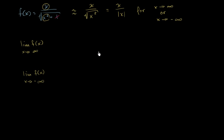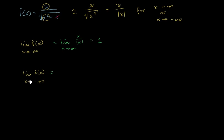It's going to be equal to x over the absolute value of x, for x approaching infinity or x approaching negative infinity. So another way to restate these limits: as we approach positive infinity, this limit is going to equal the limit as x approaches infinity of x over the absolute value of x. For positive x's, the absolute value of x is just x, so this is x divided by x, which is just 1.